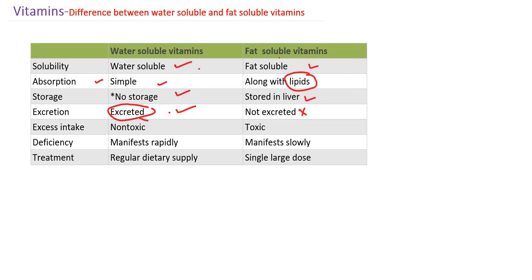Excess intake of water-soluble vitamins is non-toxic because they are excreted in the urine. Whereas excess fat-soluble vitamins are very toxic. For example, when giving vitamin A suspension to children, you must take extra precaution and not exceed the recommended dosage. Consider polar bear liver — consuming even a small piece can kill a human being because it contains a very high amount of vitamin A. Excess intake is toxic because fat-soluble vitamins are not excreted.